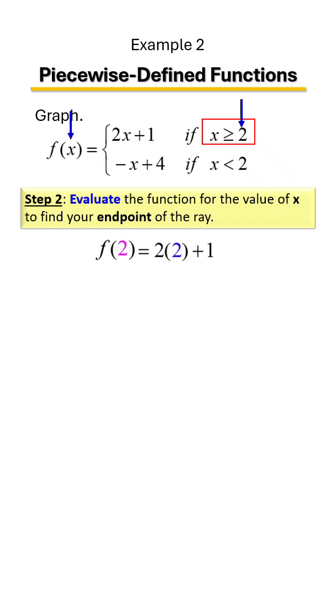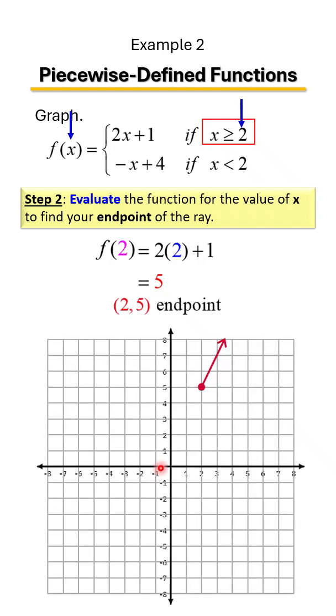When I do so, it looks like so. 2 times 2 is 4. 4 plus 1 is 5. So my output is 5. When I plug in a 2 for x, what I get out for y is a 5. So my endpoint is 2, 5. So if I go over 2 and up 5, that tells you where your endpoint starts.